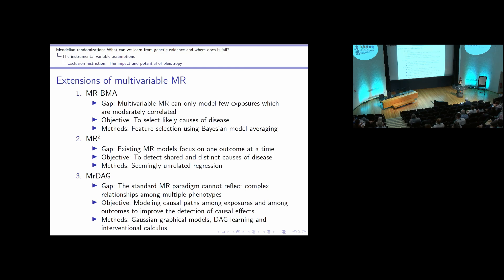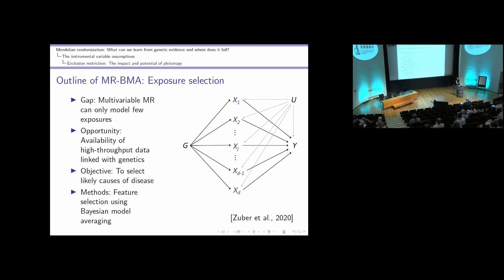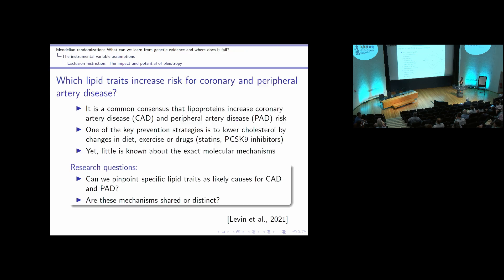I'll show three extensions of multivariable MR my group has worked on. The first is MRBMA, which performs exposure selection. Existing multivariable MR models can only handle very few exposures — two to three at most — yet we now have high-throughput metabolomics and proteomics data linked to genetics. MRBMA uses feature selection via Bayesian model averaging to model uncertainty in model selection and answer what are the most likely causes of disease.